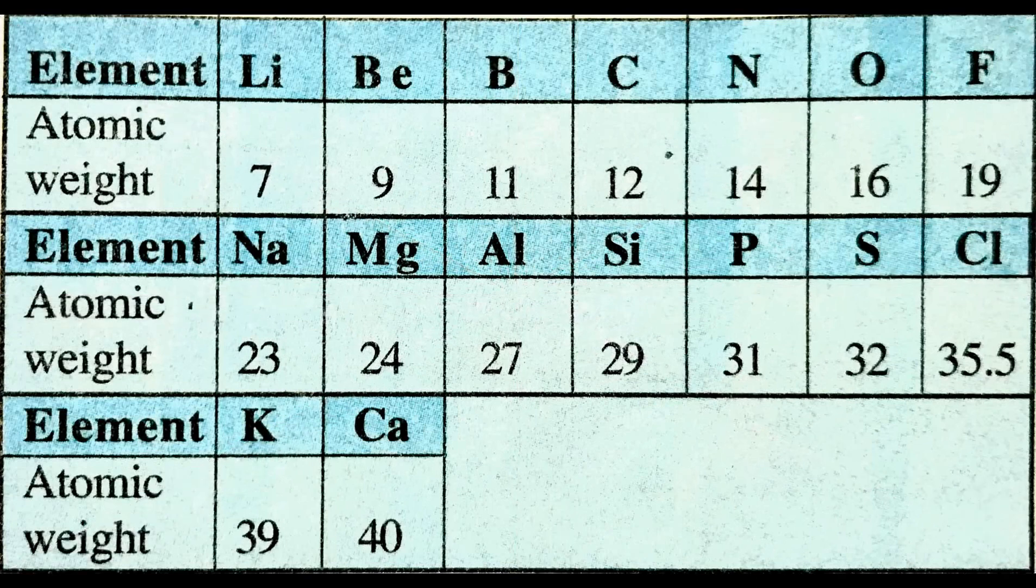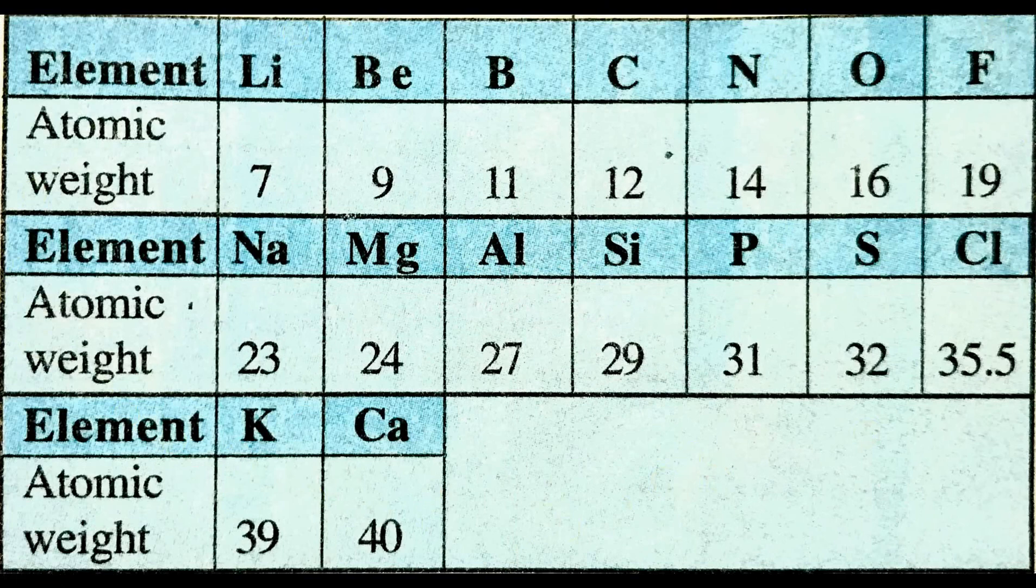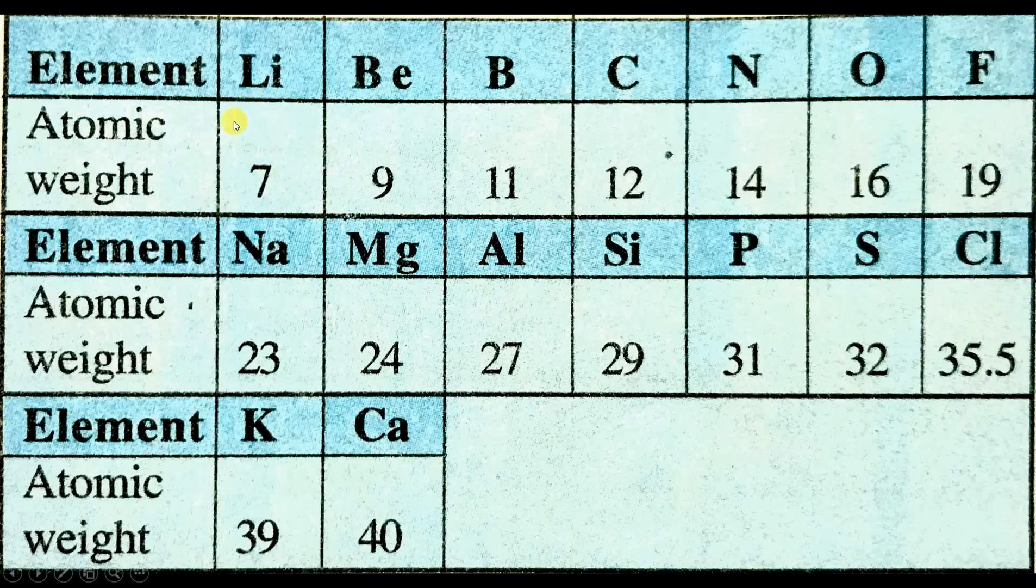This was the table which was put forth by Newland. What he said was that the first element, let us assume that lithium is the first element, now we count up to 8.